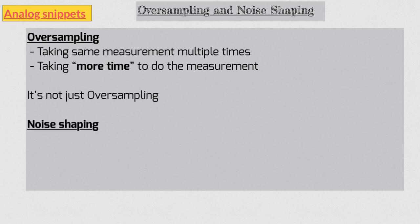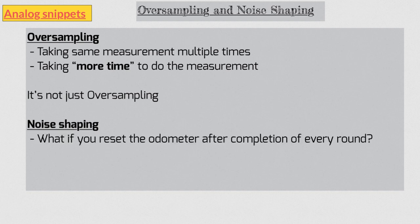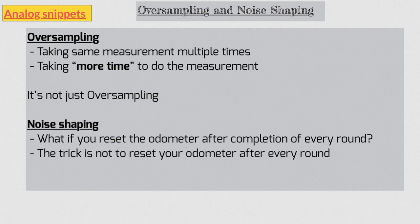In fact, you are doing noise shaping. To understand the difference, imagine that you reset your odometer every time you finish one complete round of the path. Would you be able to improve your precision this way? In fact, if you start doing this, you will be measuring 1 kilometer at the completion of every round. And if you add the reading of every round, after 10 rounds, you will get 10 kilometers. In short, you will not improve your precision. The trick here is not resetting your odometer. What you are essentially doing is to carry over your error to the next cycle. And this is known as noise shaping.